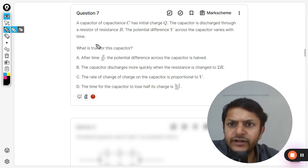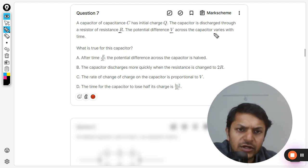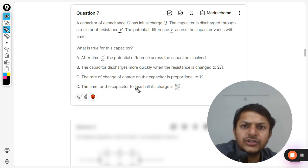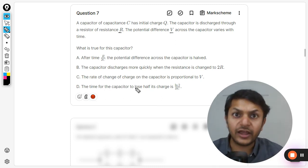Okay, let us see what is there in this question. A capacitor of capacitance C has initial charge Q. The capacitor is discharged through resistance R. The potential difference V across the capacitor varies with time. What is true for this capacitor? So my students, a simple question about discharging of a capacitor through a resistance R.